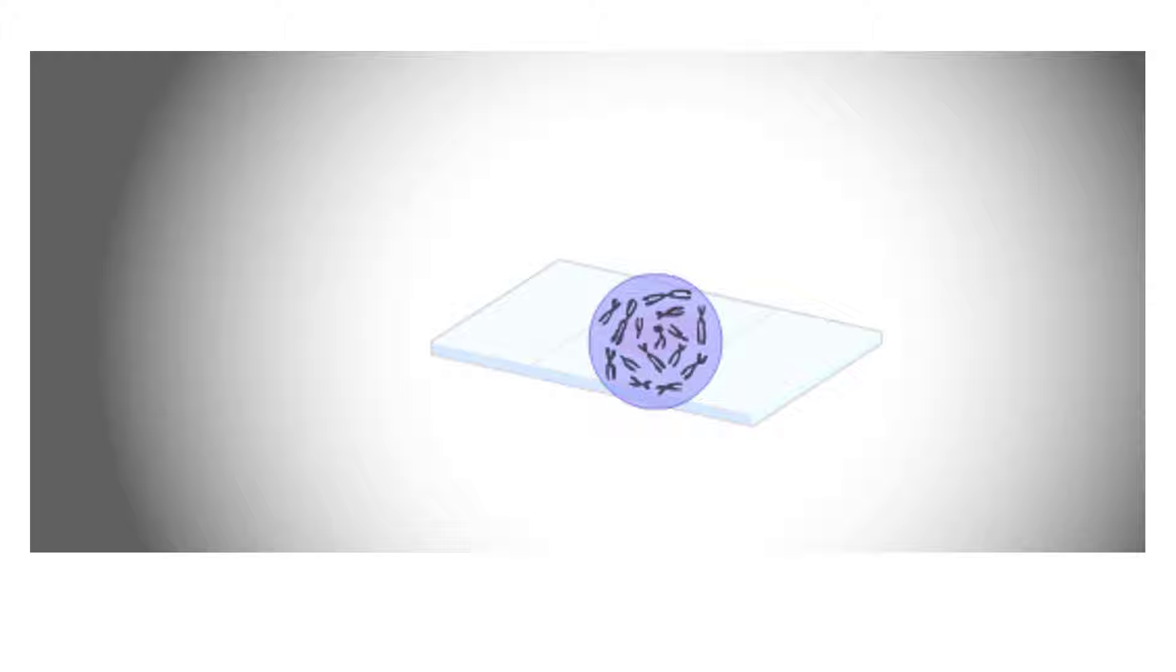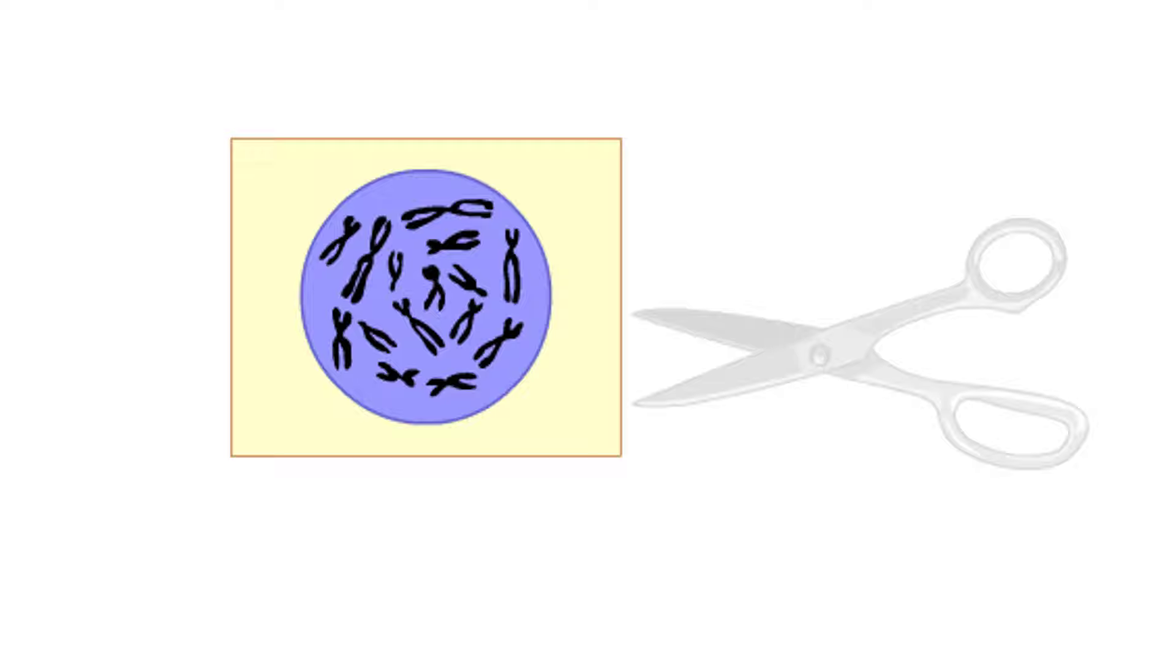The part of the photo that shows the cell's chromosomes is enlarged, and images of individual chromosomes are cut out.